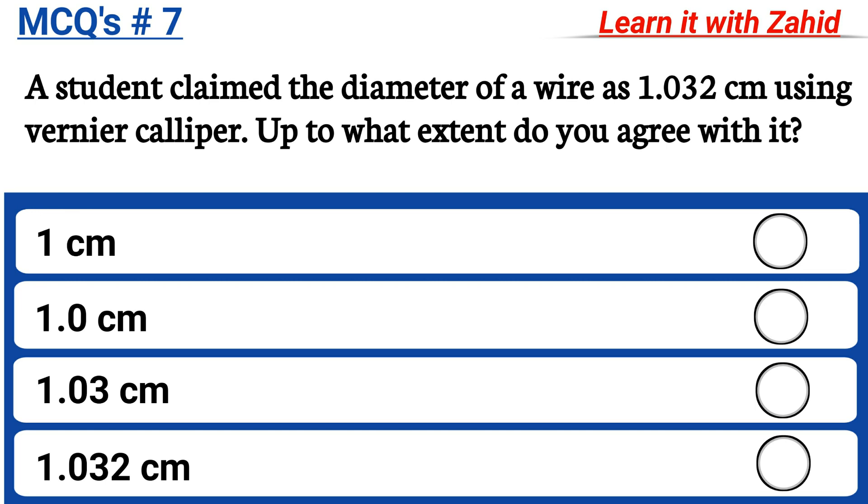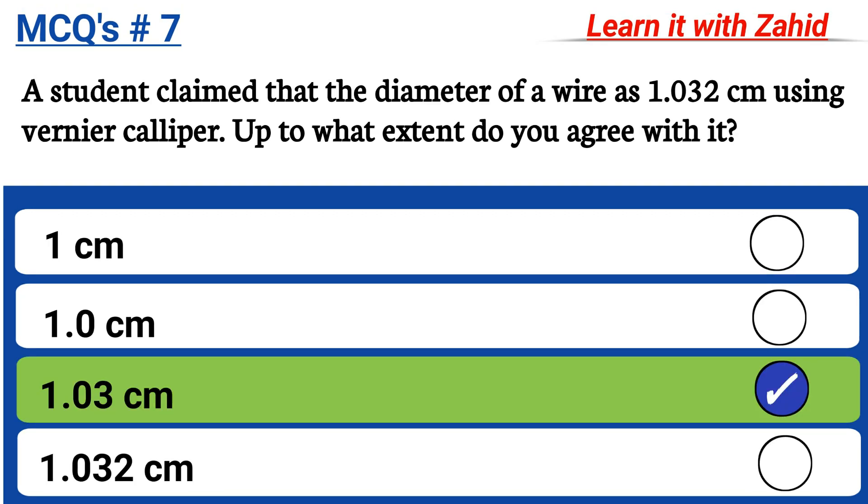the Vernier caliper. Up to what extent do you agree with it? 1 cm, 1.0 cm, 1.03 cm, 1.032 cm. And the correct answer is 1.03 cm.